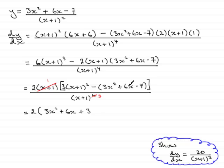And here, this bracket is being multiplied by negative 1. So, that's minus 3x squared minus 6x plus 7, and that's all over x plus 1 all cubed.